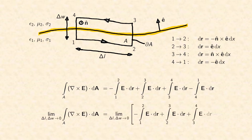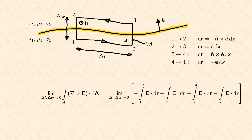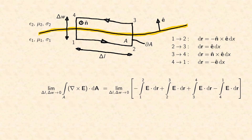Now we reduce the size of area A and make it infinitely small. In other words, we calculate the integrals in the limiting case when the length and width of the waved rectangle are both reduced to zero. Let us first focus on the integrals from corner 4 to 1 and from 2 to 3 on the right-hand side of the equation. When the length delta L becomes infinitely small, these two integrals will be identical. However, they keep their opposite sign and therefore they cancel out each other exactly.